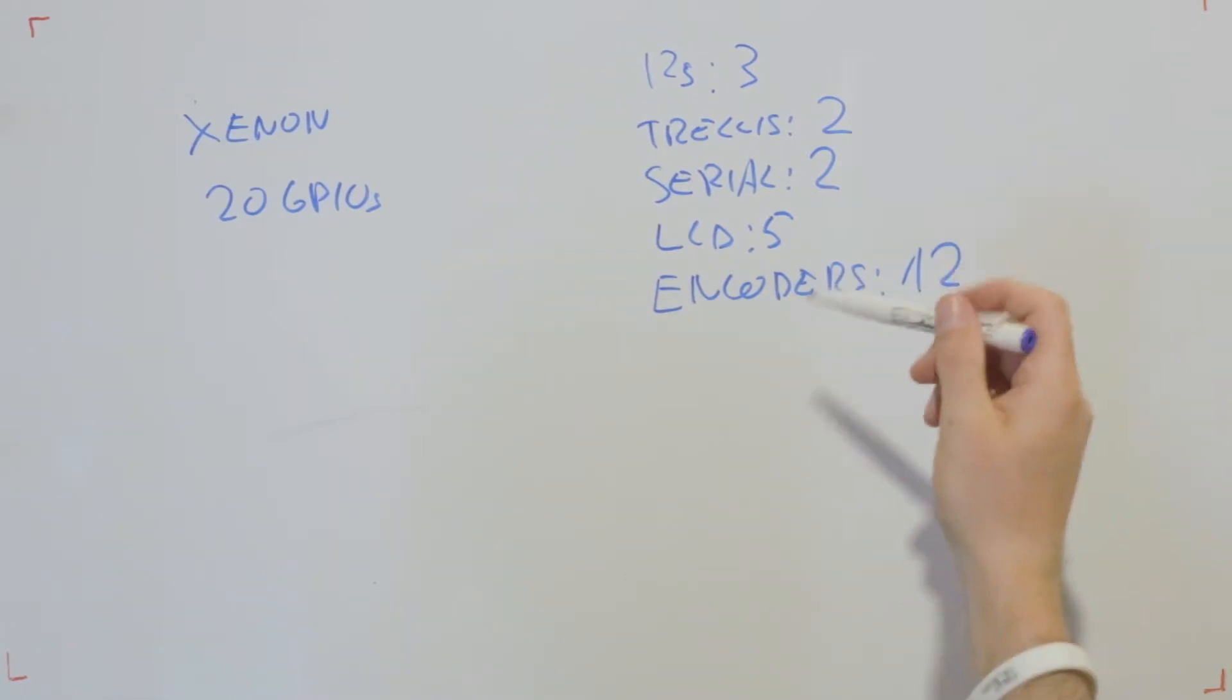When you sum all this up it looks like we need 24 pins and we do not have 24 pins. So this is the problem. This is what we have to figure out to actually connect the encoders to the Xenon. And there are multiple methods and I want to go into them right now.